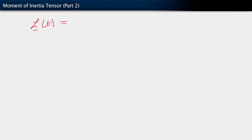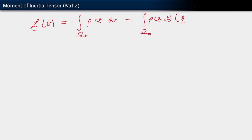So let's apply this. What we are seeing then is that the angular momentum, which is the integral over omega_t of rho·v dV, is the integral over omega_t of rho. We're going to write v as ġ, a function of time, plus ω̂ — remember ω̂ is a function of time — cross (x minus g).